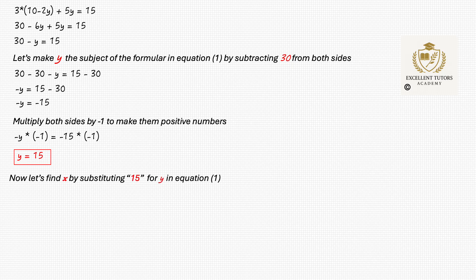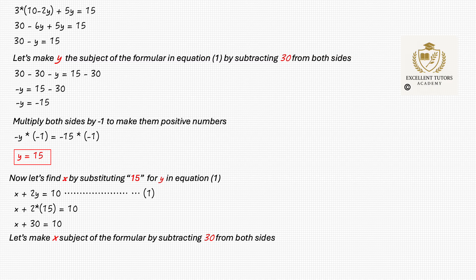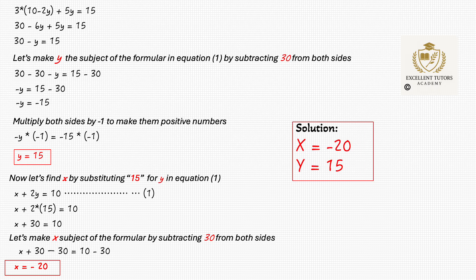Now let's find x by substituting 15 for y in equation 1. x plus 2y equals to 10, so x plus 2 times 15 equals to 10, giving x plus 30 equals to 10. We make x the subject by subtracting 30 from both sides: x plus 30 minus 30 equals to 10 minus 30, so x equals to minus 20. Using both methods, we get the same answer: x equals to minus 20 and y equals to 15.